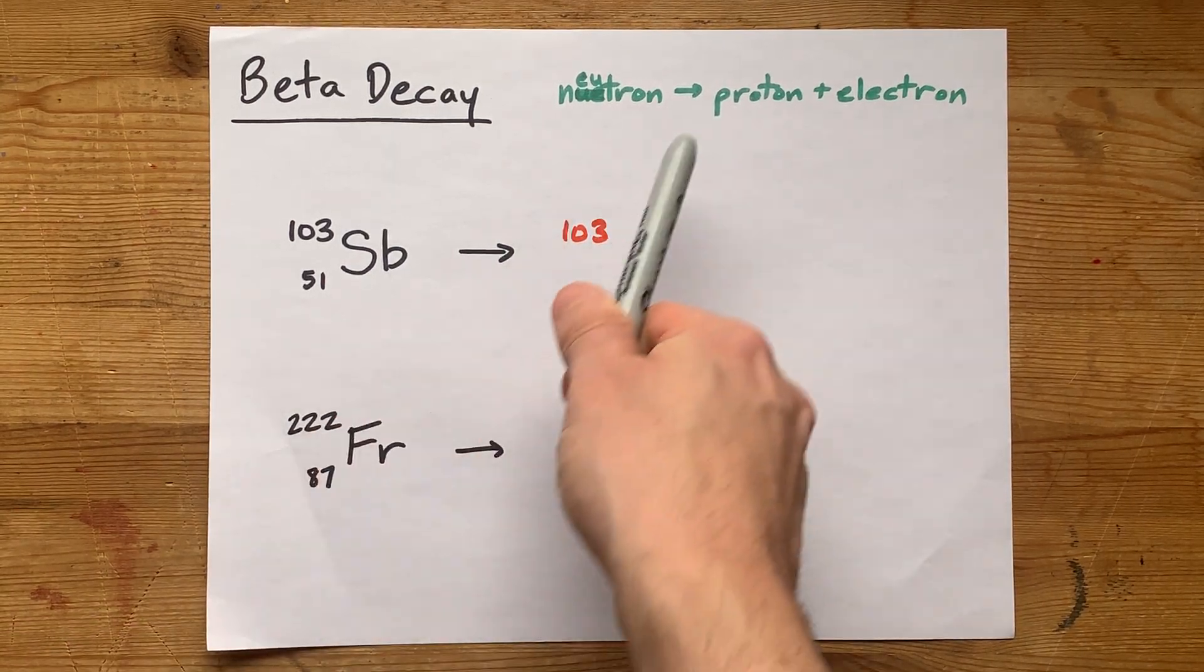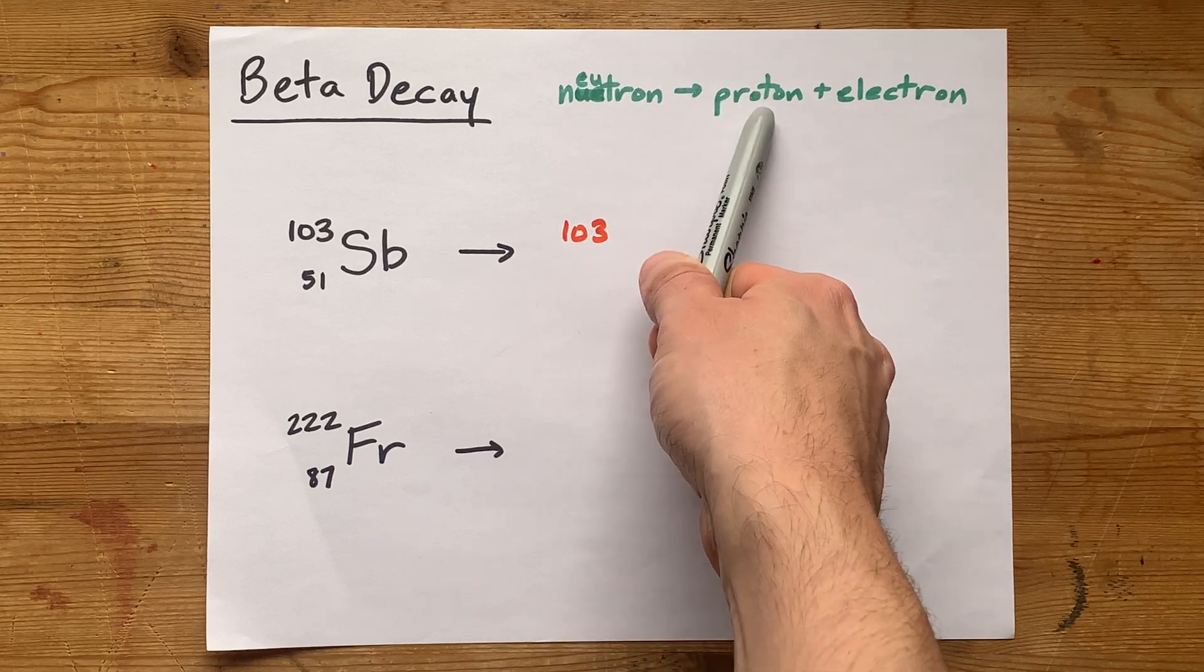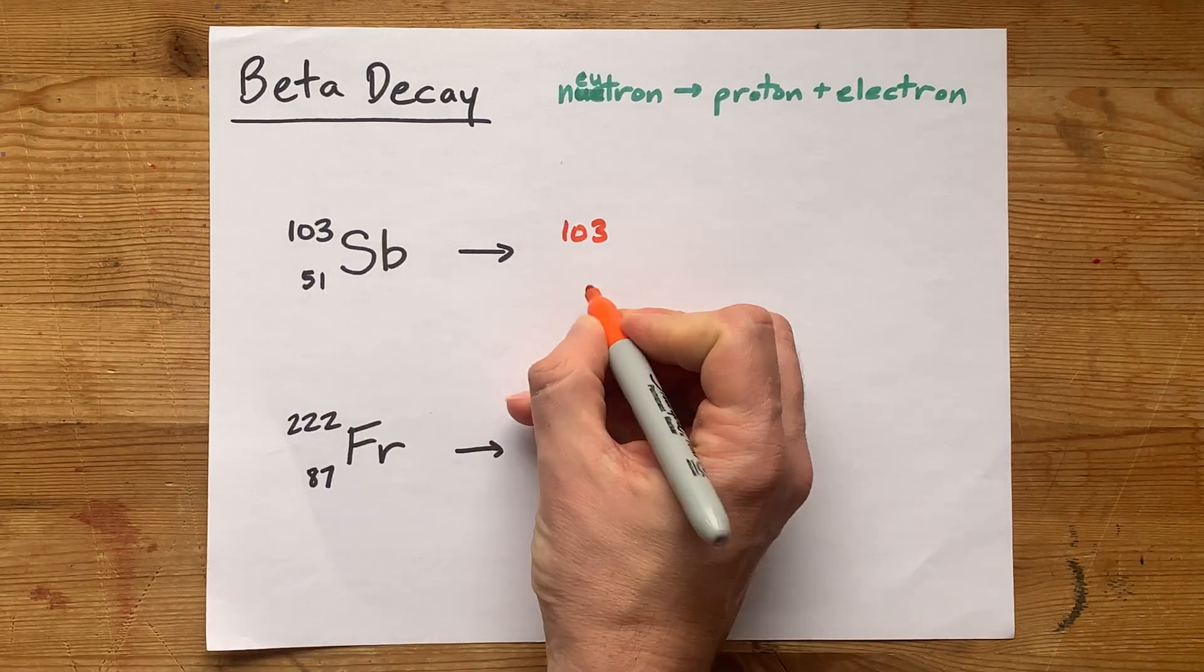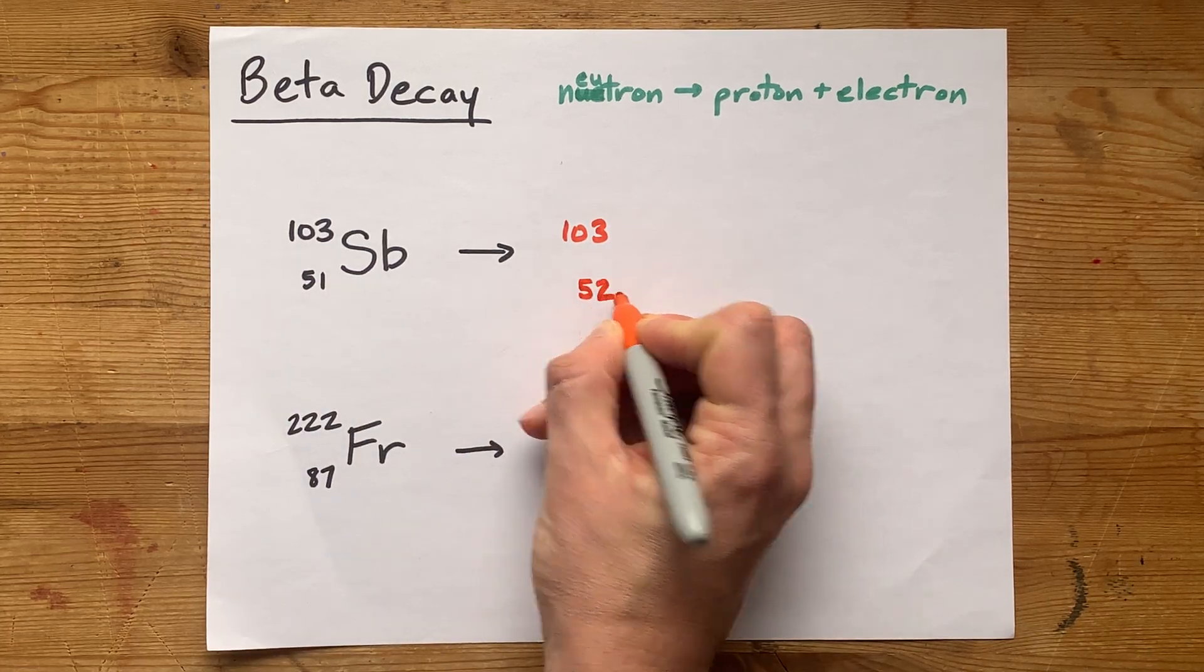Now, you are gaining a proton, though. Again, you've sacrificed a neutron, but you're gaining a proton. So the number here goes up by one.